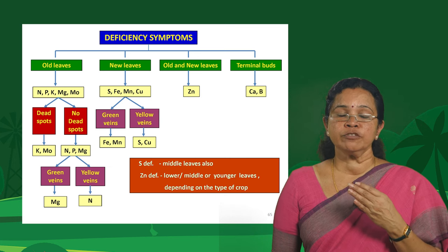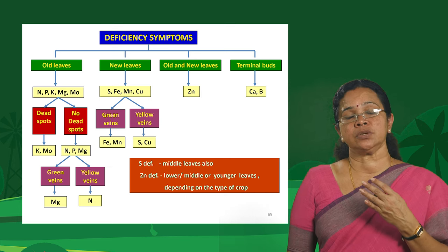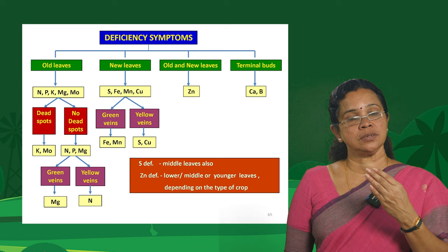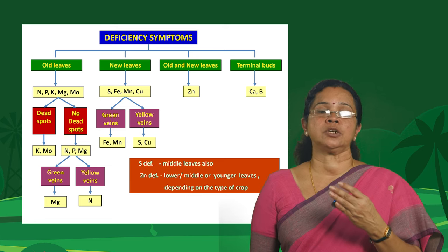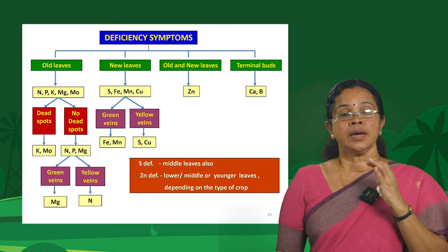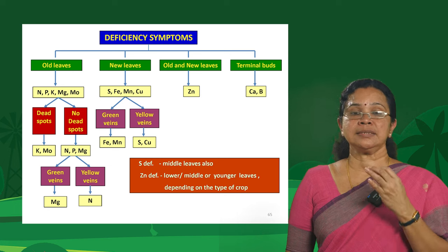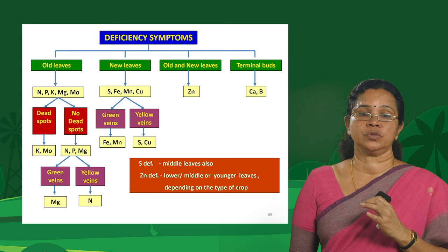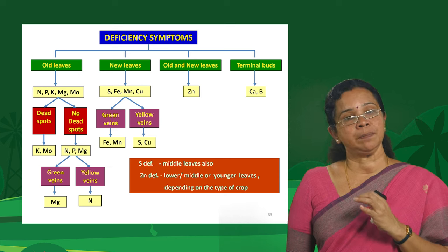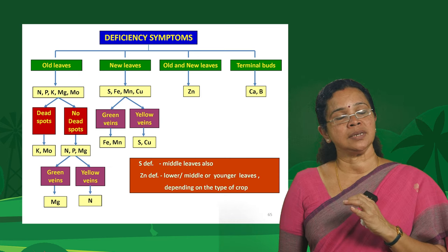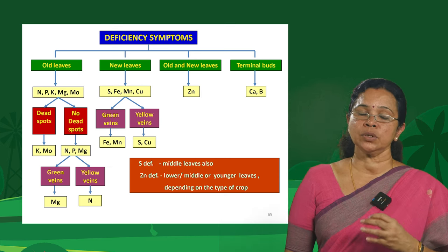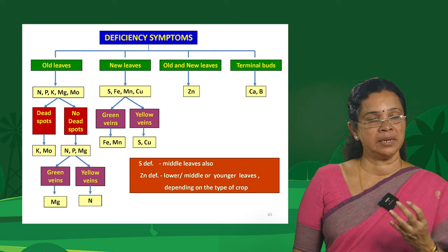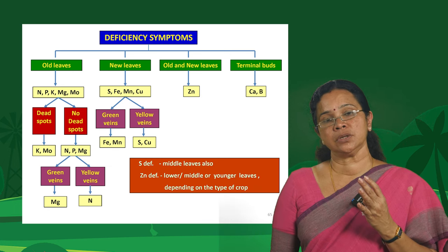What are the corrective measures for deficiency or toxicity? That is beyond the purview of this particular topic. Sulphur deficiency can be seen in the middle leaves due to its partial mobile nature, and zinc deficiency — depending on the crop — can be seen in the lower, middle or younger leaves. That is all about nutritional disorders in crops.